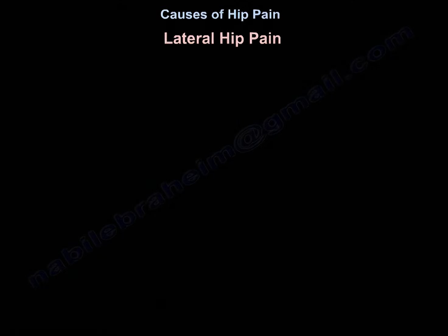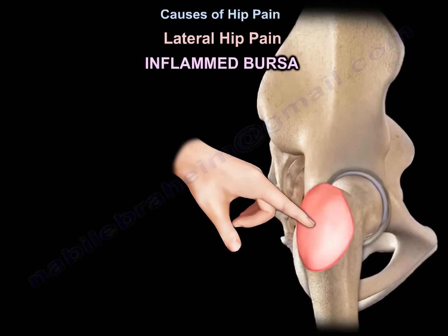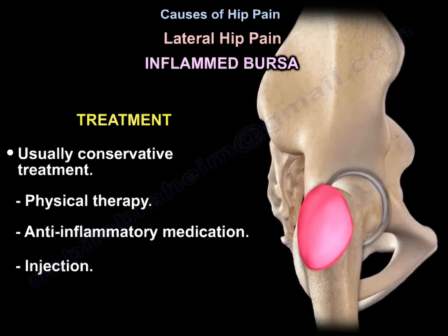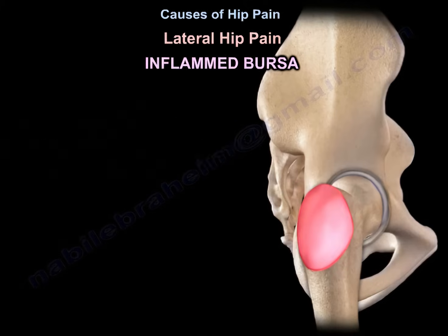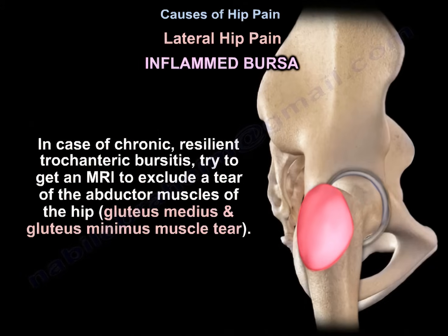Lateral hip pain is usually due to an inflamed bursa. Treatment is usually conservative with physiotherapy, anti-inflammatory medications, and injections. Surgical treatment by excision of the bursa is rarely done. In cases of chronic, resilient trochanteric bursitis, an MRI should be obtained to exclude a tear of the abductor muscles — the gluteus medius and gluteus minimus.